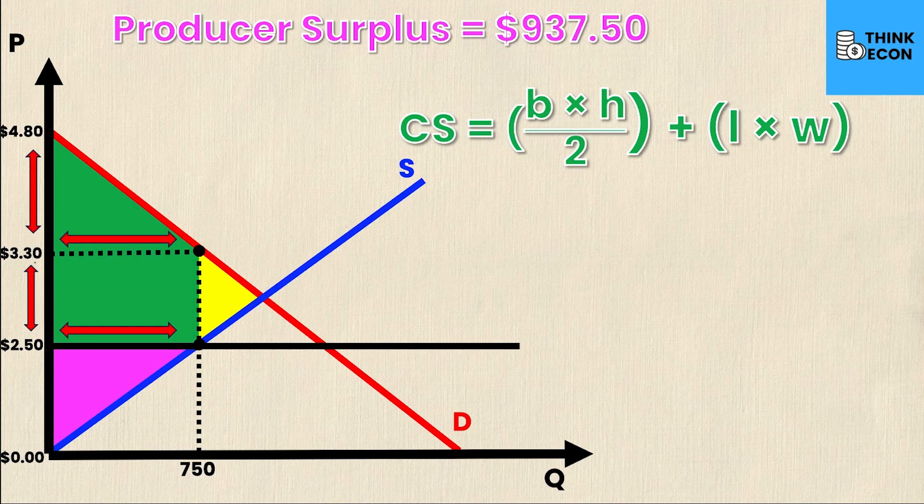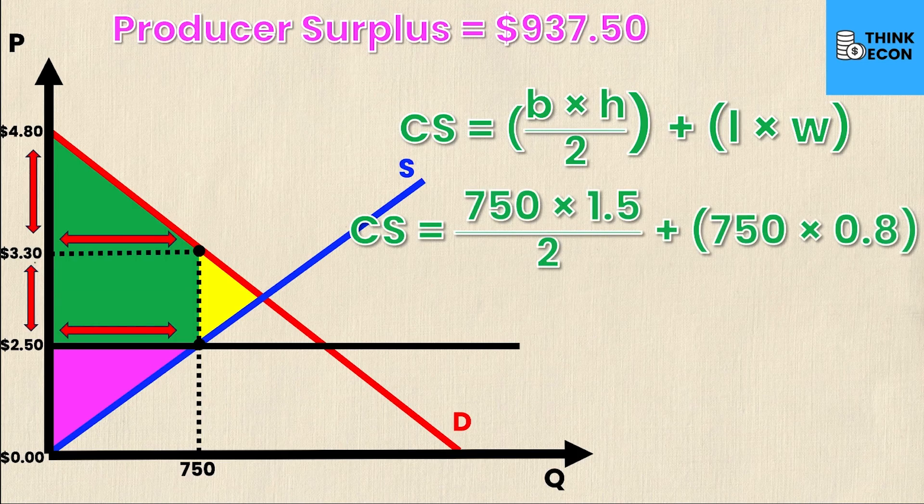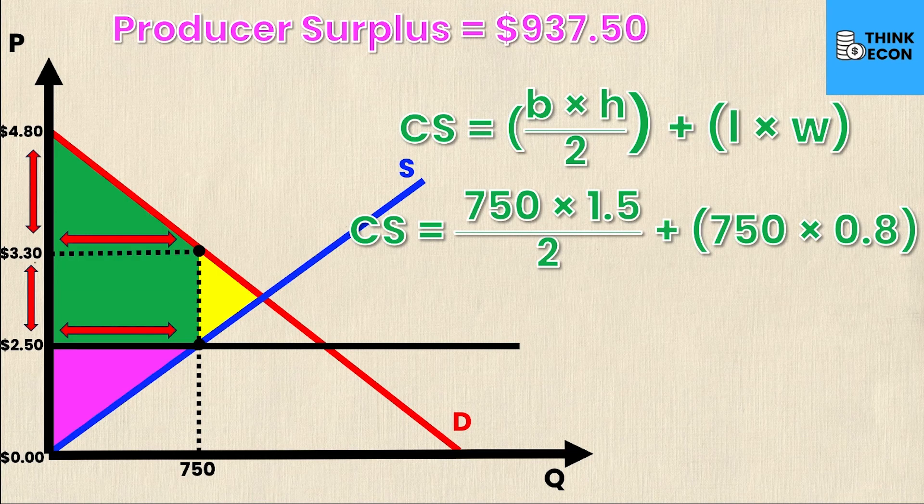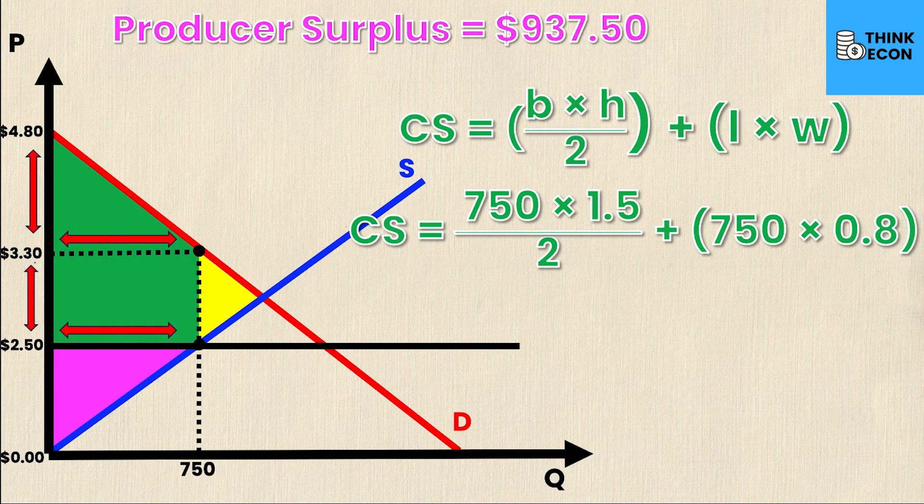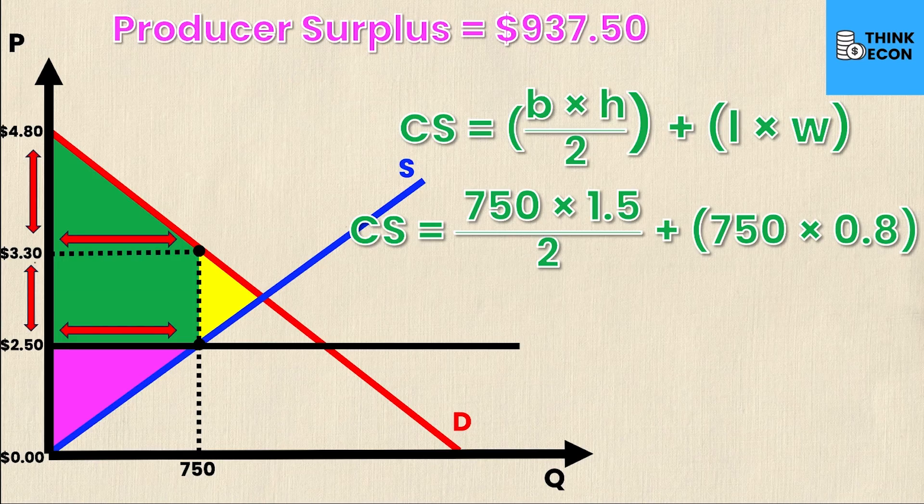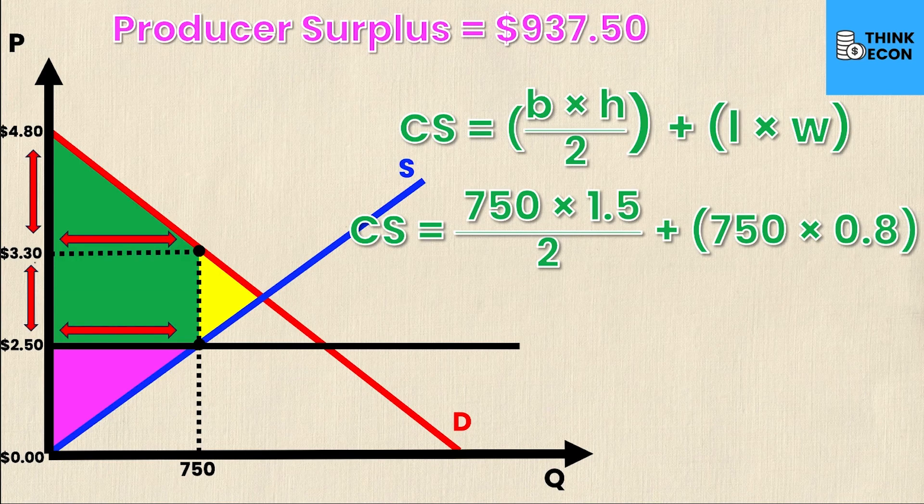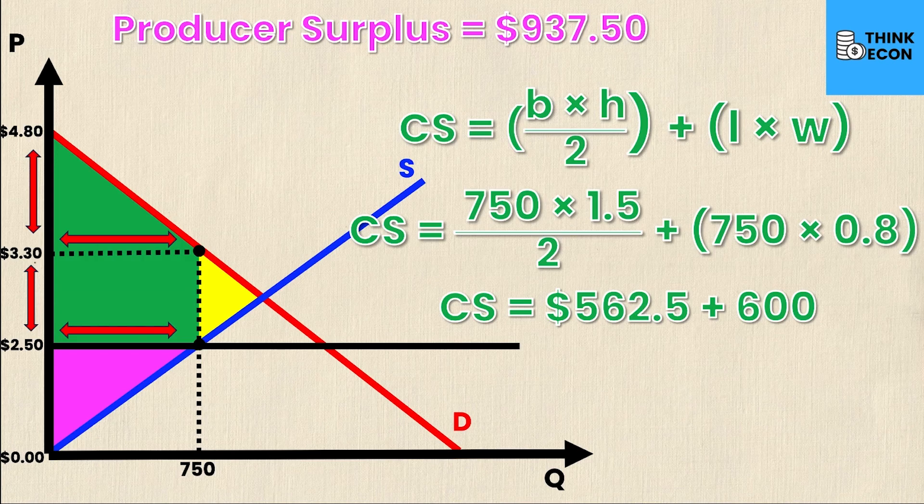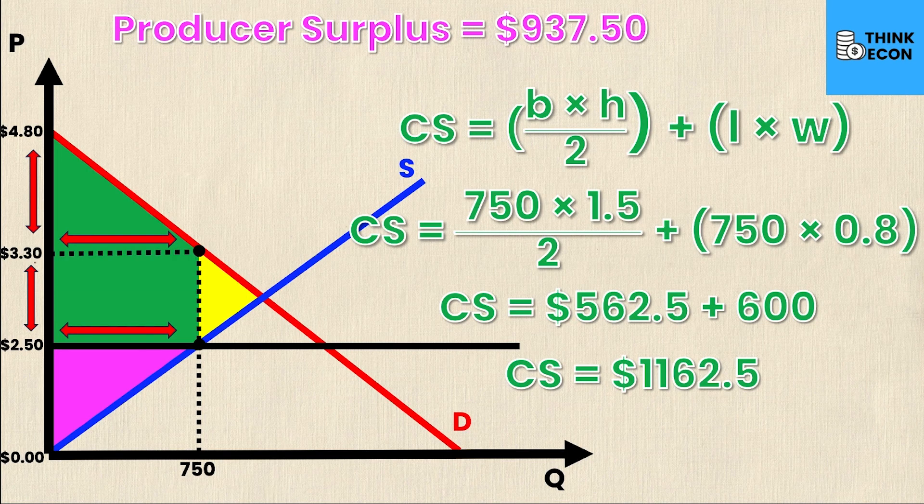Substituting in all of these values, consumer surplus equals 7.50 which is the base of the triangle, times 1.5 which is the height of the triangle, divided by two, plus the area of the rectangle which is 750 times 0.8. Simplifying this I get consumer surplus = $562.50 + 600, which yields a final value of consumer surplus equaling $1,162.50.